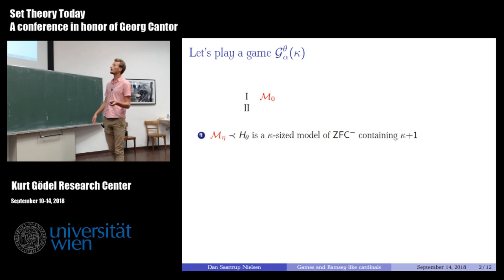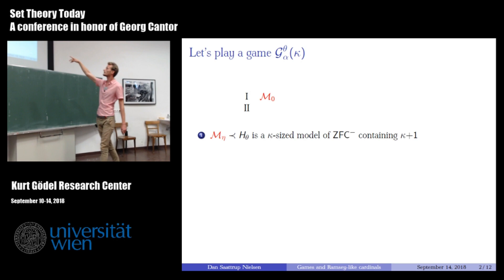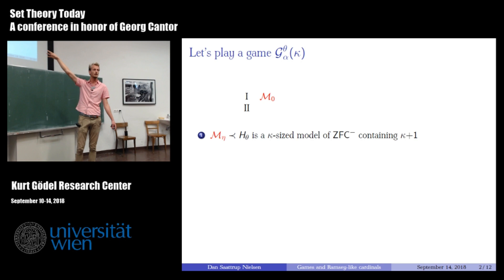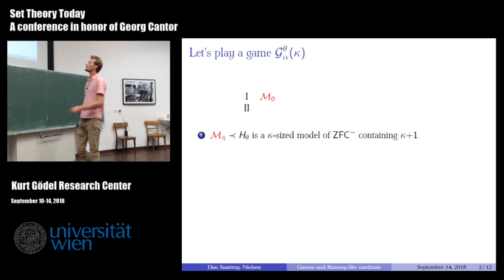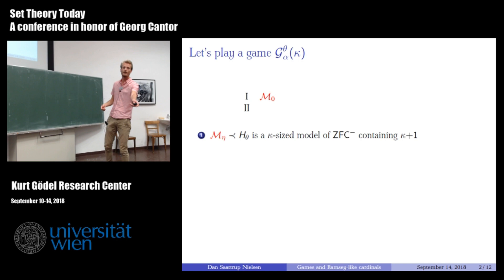Player one starts off by playing a model. This model is going to be a κ-sized model of ZFC minus — recall that ZFC minus is ZFC without the power set axiom. It has to contain κ+1 as a subset, and furthermore it has to be an elementary substructure of H_θ.